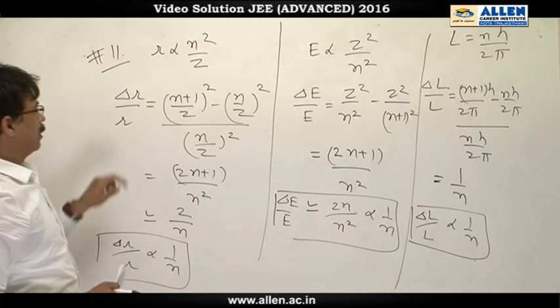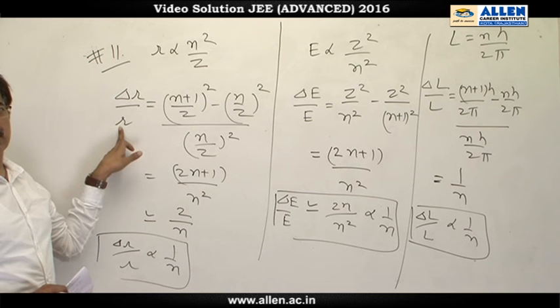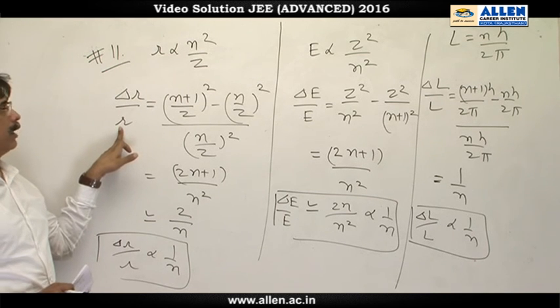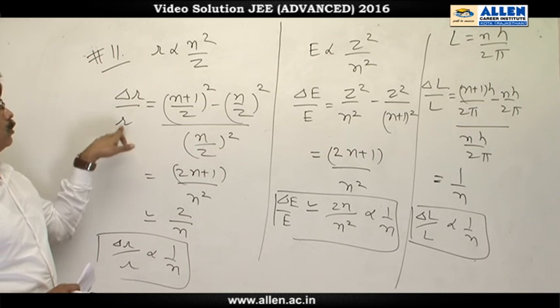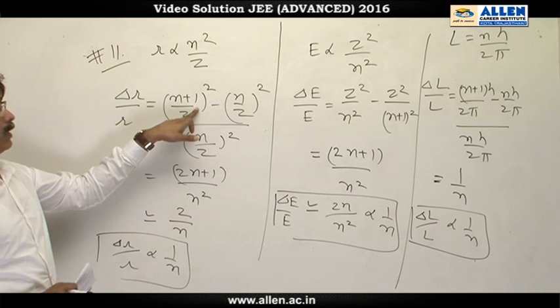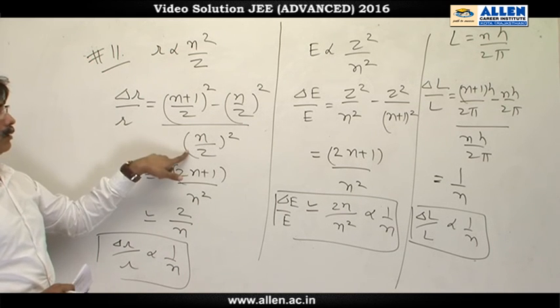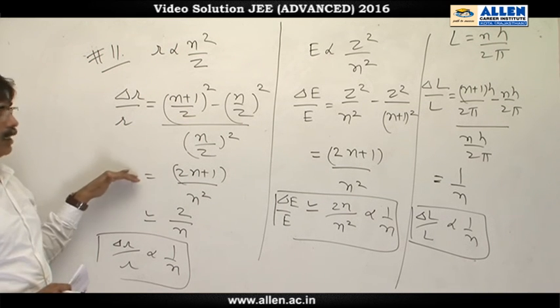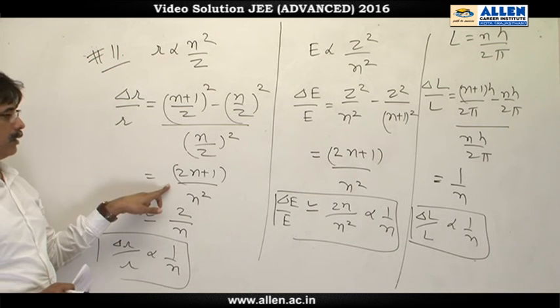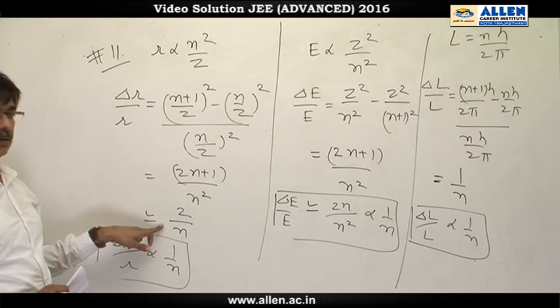We are required to solve delta r by r. So we choose two consecutive orbits, one of principal quantum number n and next n plus 1, and take their difference. So we get delta r by r as n plus 1 by z square minus n by z square divided by r. On solving, z is eliminated, and we arrive at this result. And since n is far greater than 1, we approximate it as 2 by n.